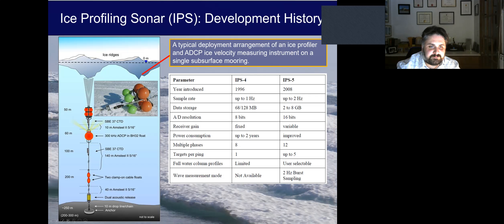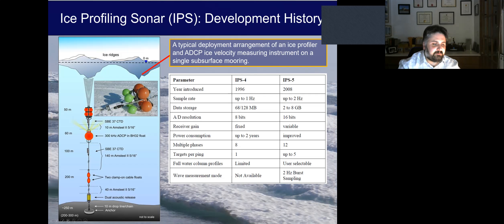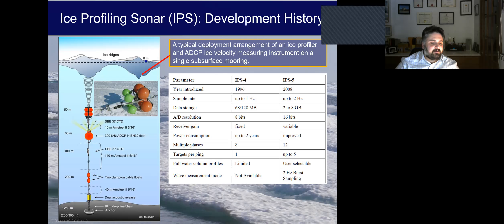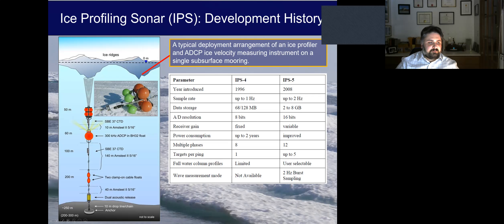The ice profiling sonar from ASL is typically deployed in a taut-line upward-looking configuration as shown here. The mooring usually has a number of other instruments on it, such as a CTD or ADCP. We also have an acoustic release at the bottom and an anchor to hold the whole thing down.